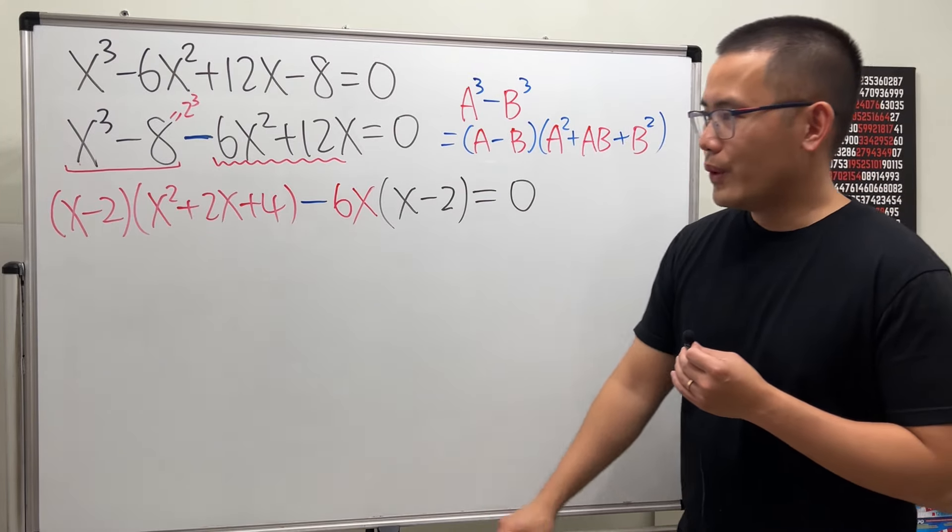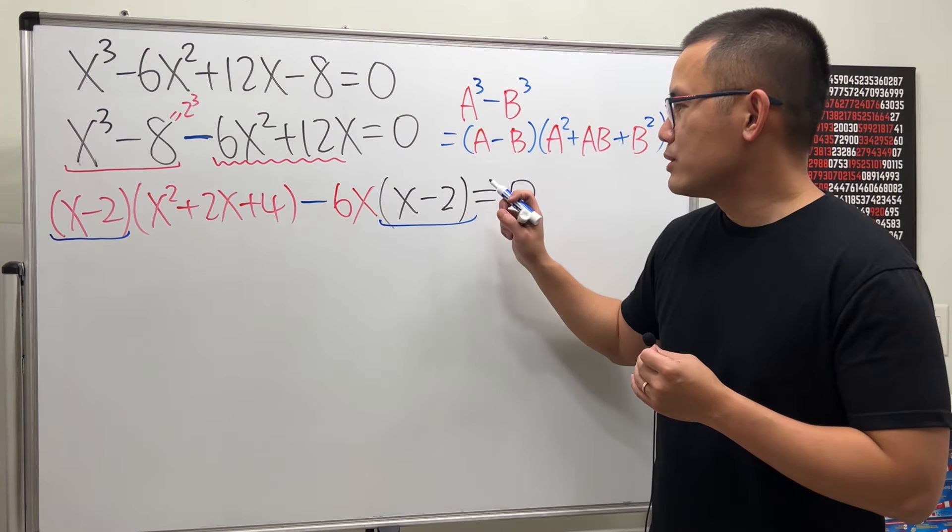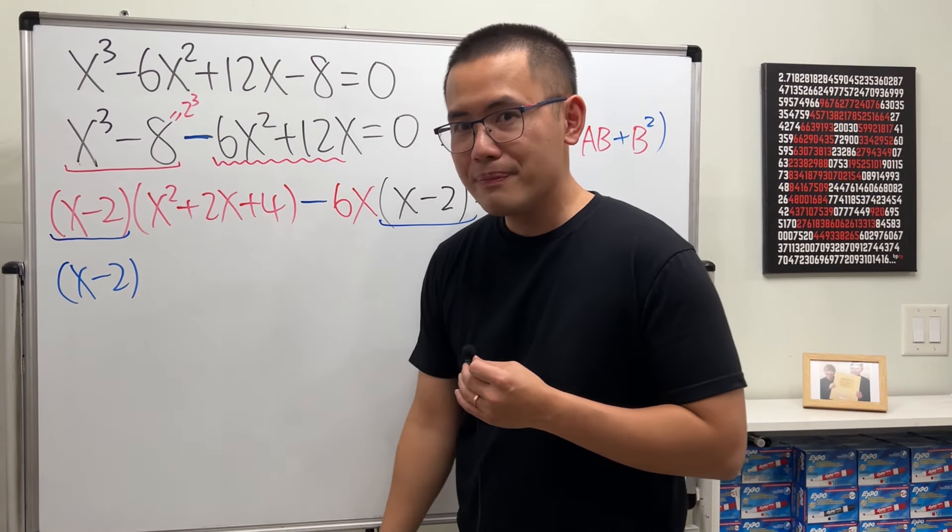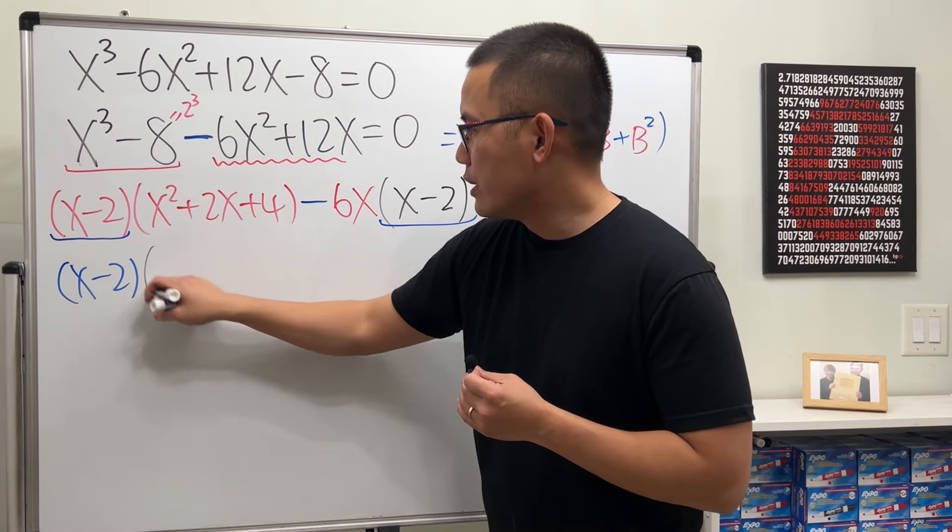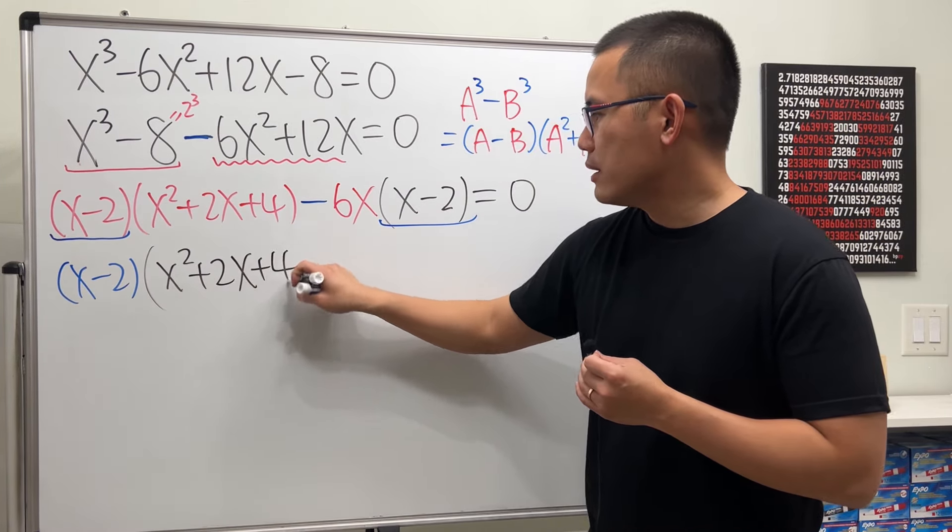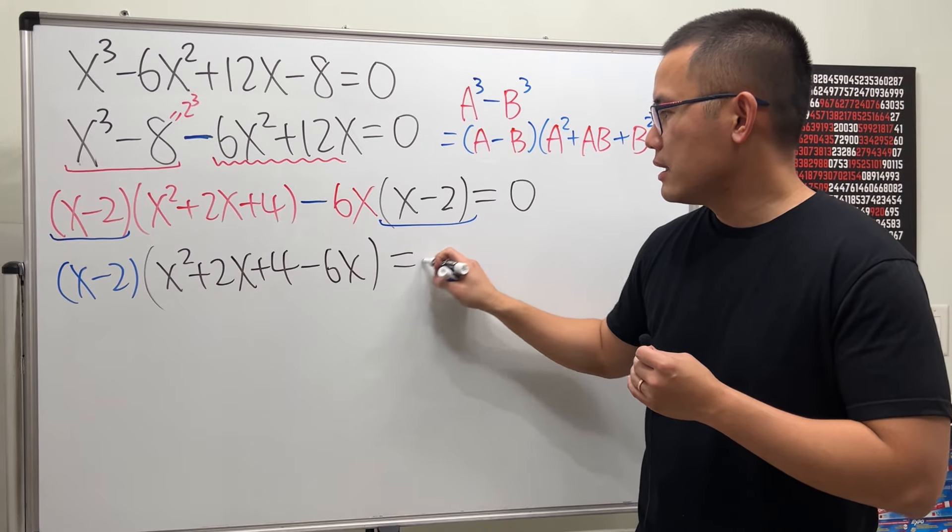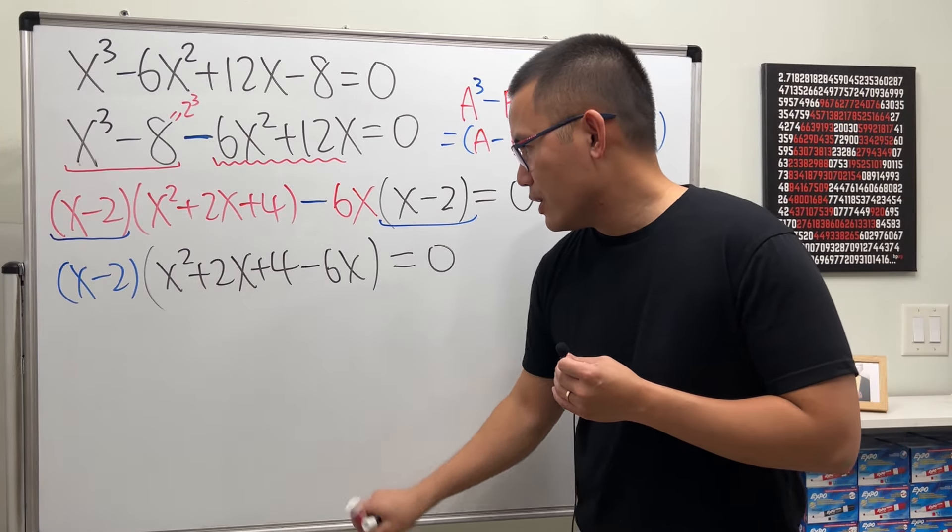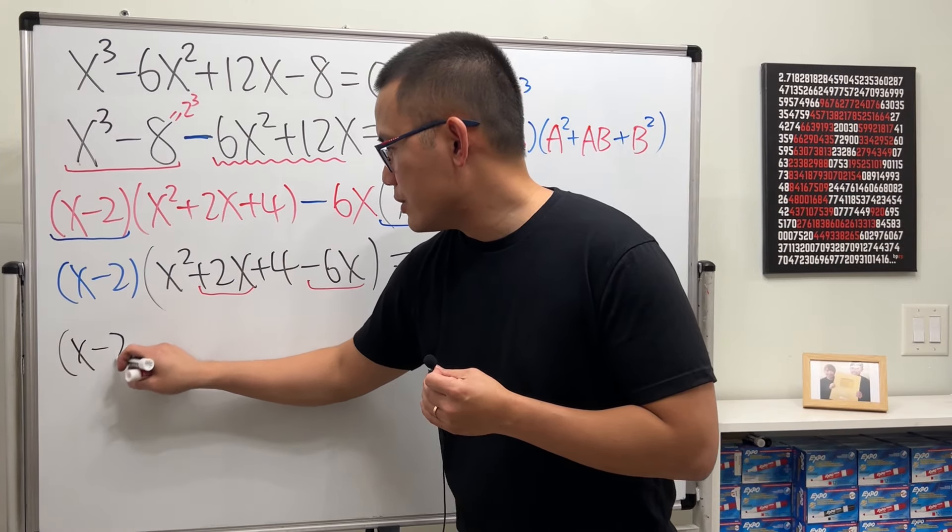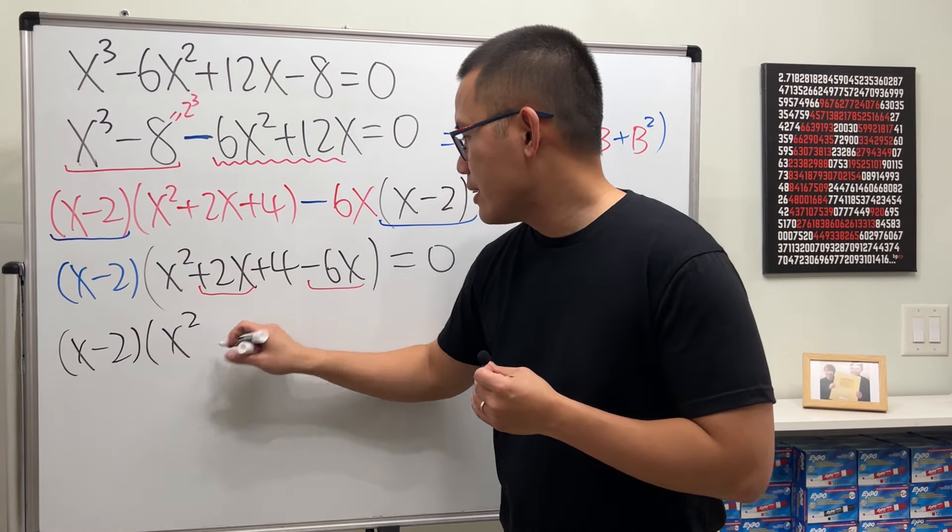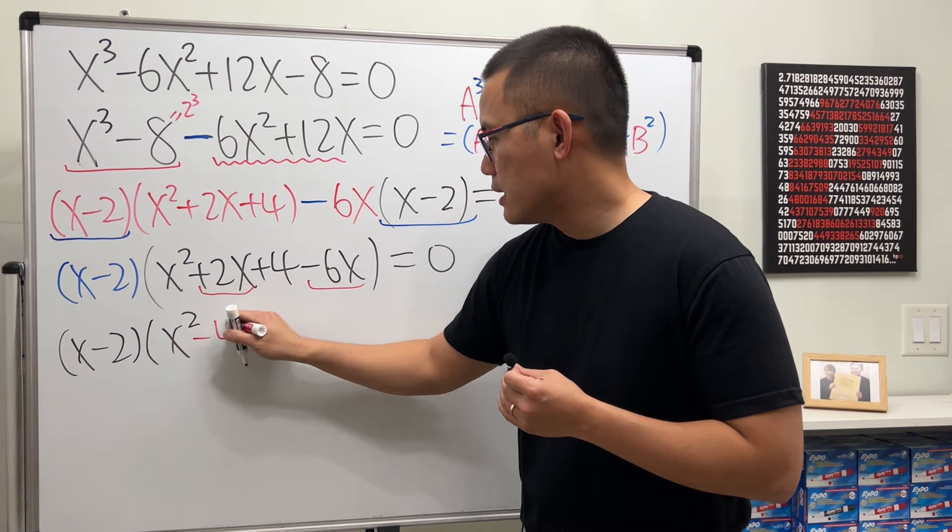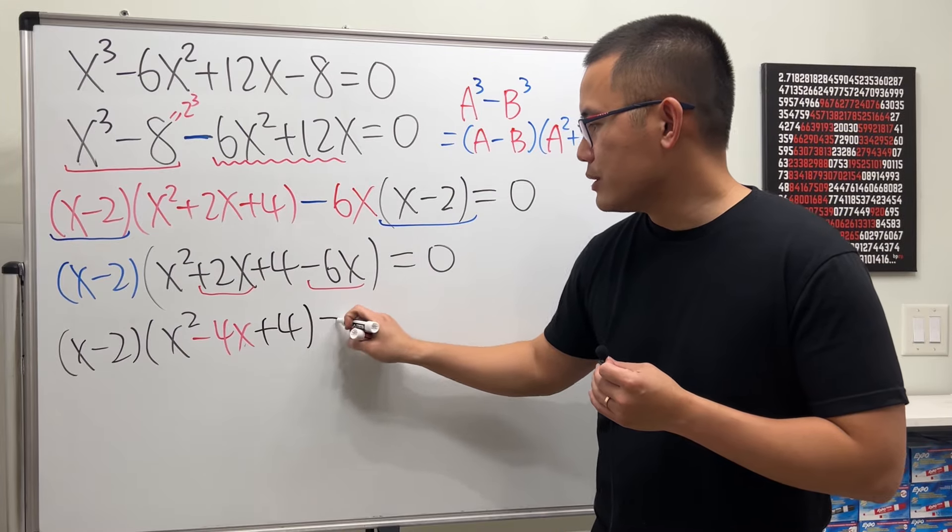Now, notice that x minus 2, x minus 2 is in common. So, we can factor that out and just put it down one time. And then, right here, we can just put x squared plus 2x plus 4 minus 6x. And then, we see, we can combine this and that together. So, x minus 2, x squared, that is minus 4x. And then, plus 4 is equal to 0.